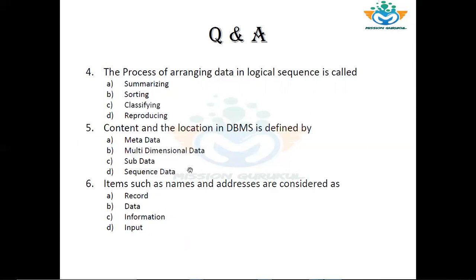Question number 6: Items such as names and addresses are considered as — Record, Data, Information, or Input? Names and addresses mean data or information. In MS Access, every thing is data. We call processed logical data as information. The correct answer is Data.